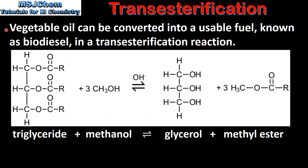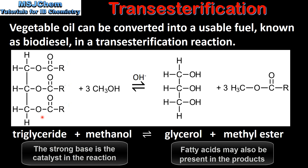Vegetable oil can be converted into a usable fuel known as biodiesel in a transesterification reaction. In a transesterification reaction, the triglycerides in the vegetable oil react with alcohol — in this case methanol — in the presence of a strong base such as sodium hydroxide to form glycerol and methyl ester. The methyl ester is also known as biodiesel. An excess of alcohol is used to drive the position of equilibrium to the right in favour of the products.